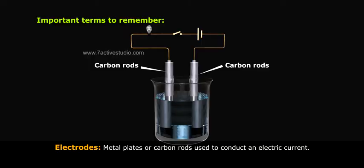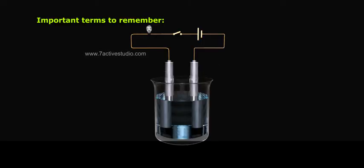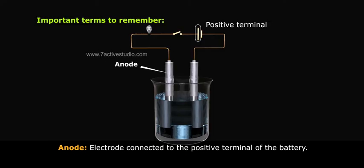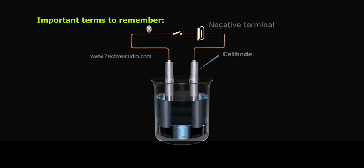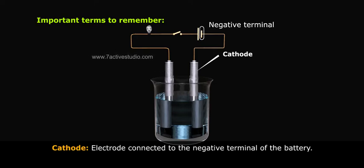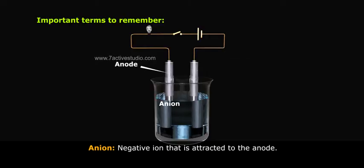Electrodes: metal plates or carbon rods used to conduct an electric current. Anode: the electrode connected to the positive terminal of the battery. Cathode: the electrode connected to the negative terminal of the battery.